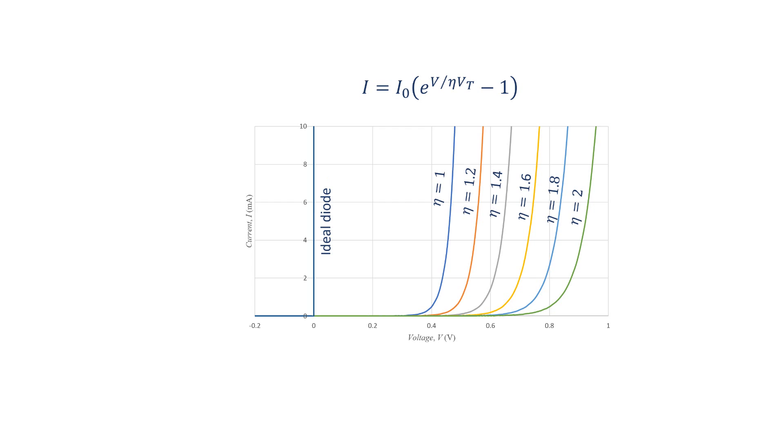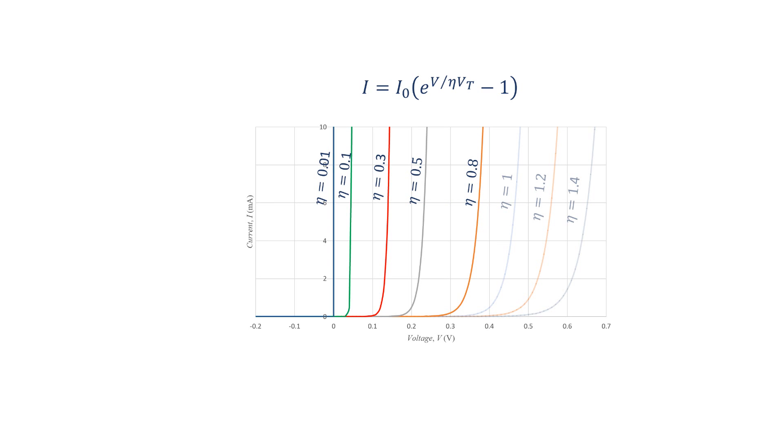In semiconductor diodes, the ideality factor cannot be less than 1. But let's hypothetically assume some values less than 1 for eta. As you can see, by decreasing eta, the characteristics shift to the left and get closer to the ideal diode.